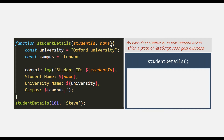The parameters are StudentID and name. And for these two parameters, while calling the function, we are passing these arguments. So these arguments will be stored inside this box. Similarly, inside this StudentDetails function, we are also declaring a University and campus variable. So these variables will also get stored inside this box.